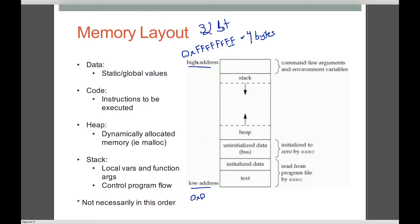How all this memory is broken down is that the program is mapped into memory and certain sections or addresses are used for specific things. Certain areas are used for data, certain things for code. We have constructs like the heap and the stack that we use in the program. What we're going to focus on here is the stack.